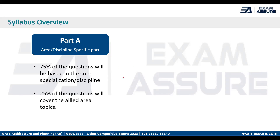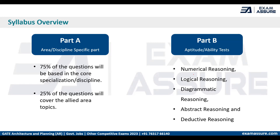As mentioned in the notification, Part B questions are related to numerical reasoning, logical reasoning, diagrammatic reasoning, abstract reasoning, and deductive reasoning. For numerical reasoning, one can expect questions related to speed, distance, and time. For diagrammatic reasoning, questions related to four figures will be given, and in the options you will have to choose the correct fifth one.